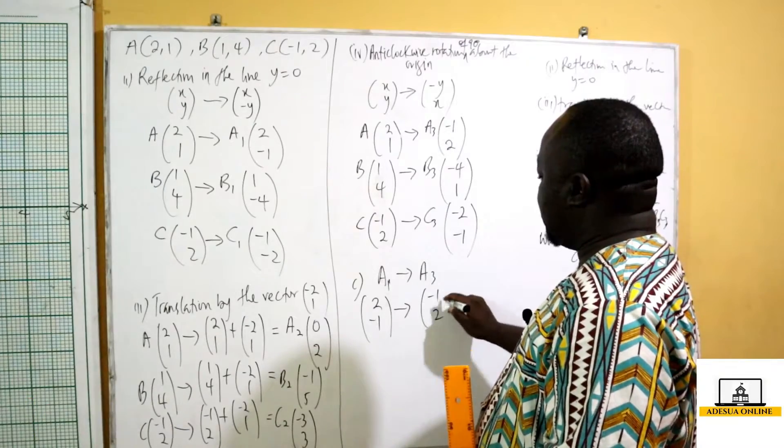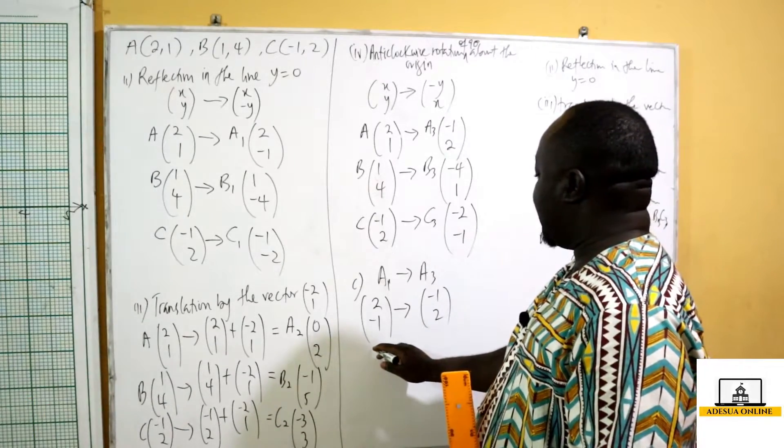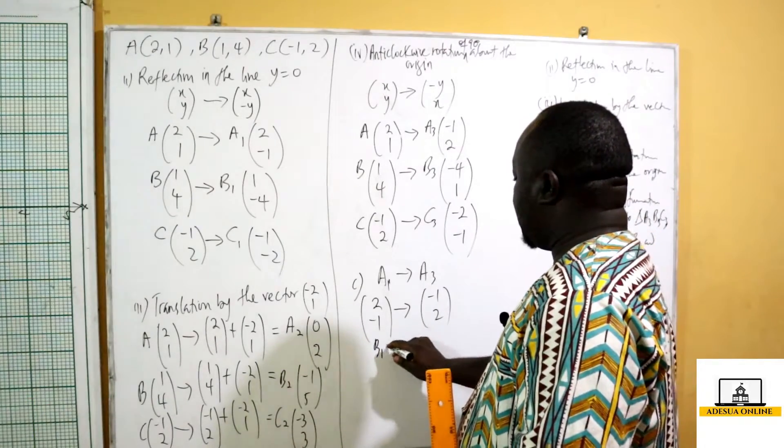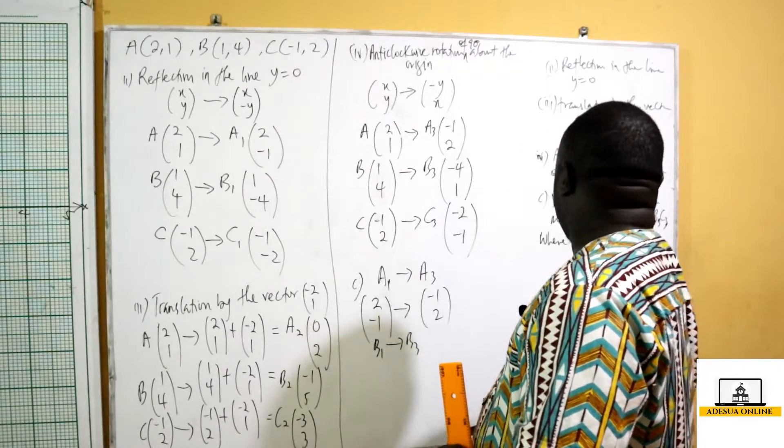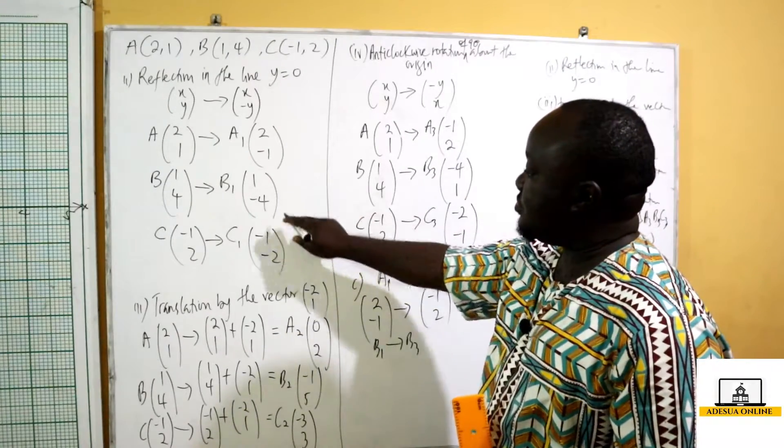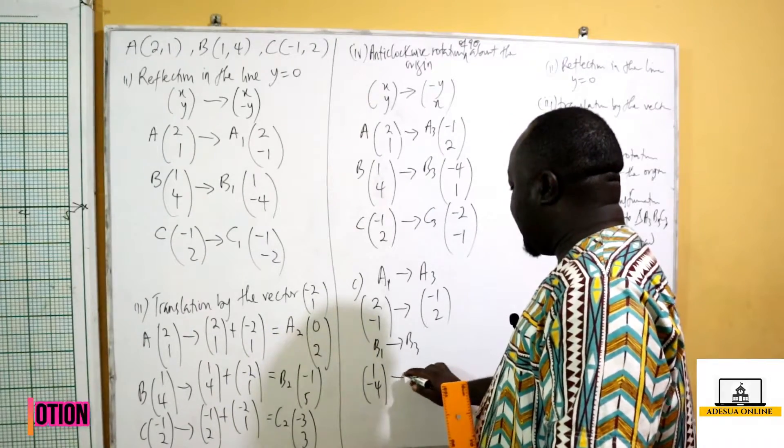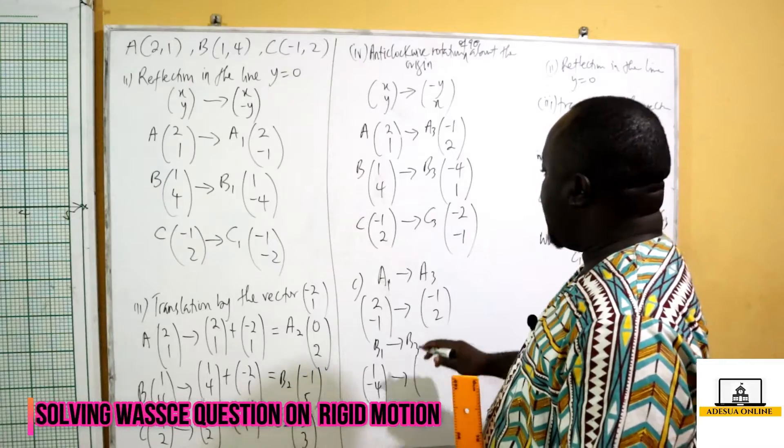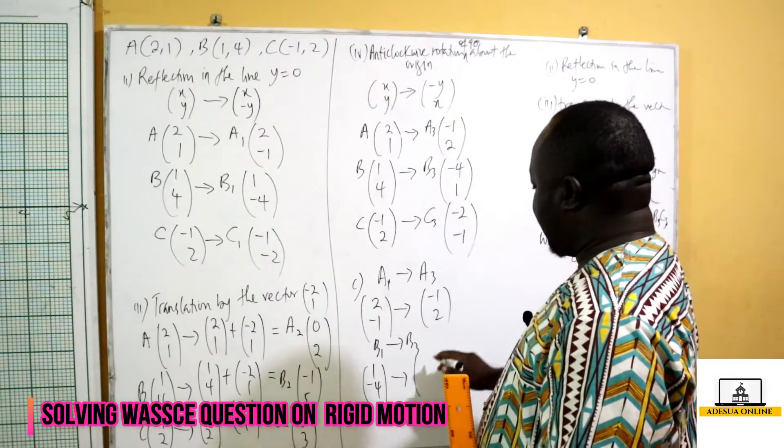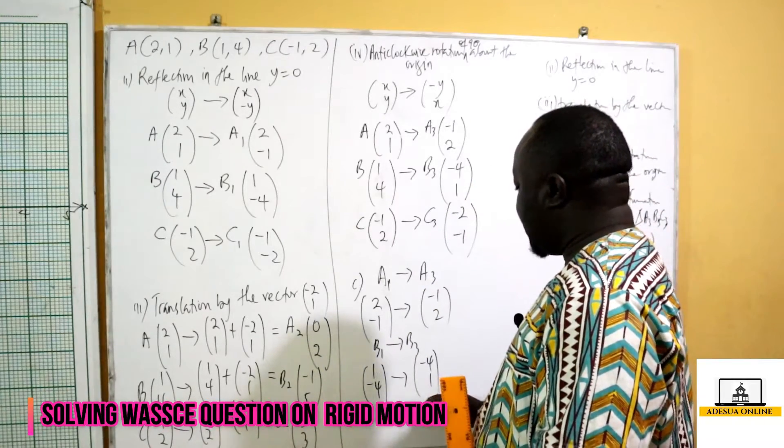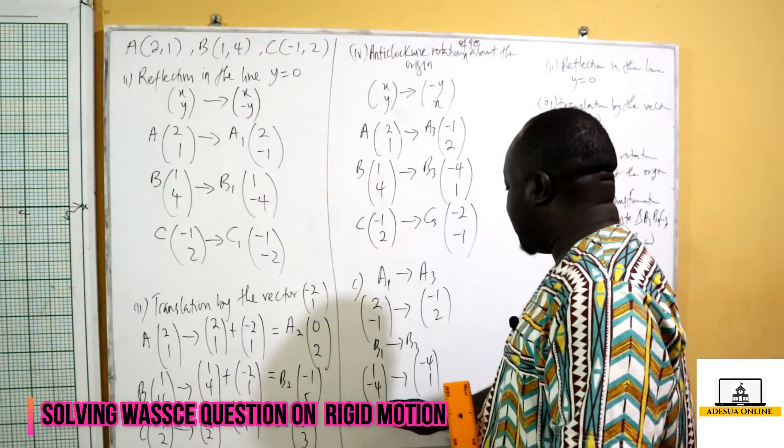And then we have B1 mapping onto B3. B1 is (1, -4), and then B3 is (-4, 1). And then our C1 mapping onto C3...